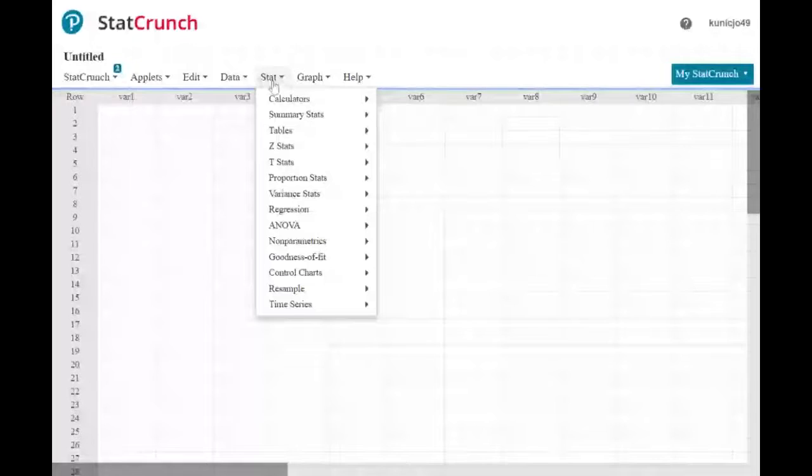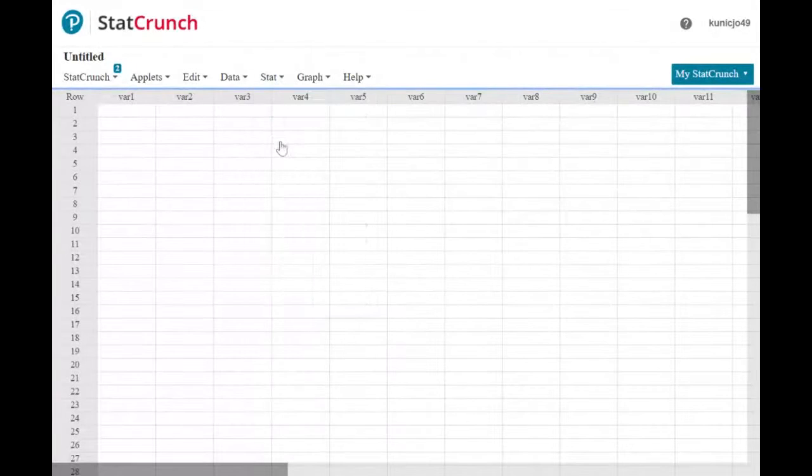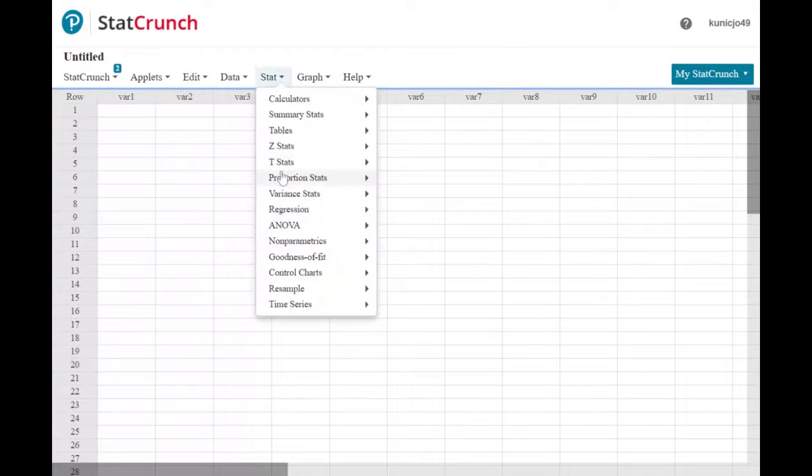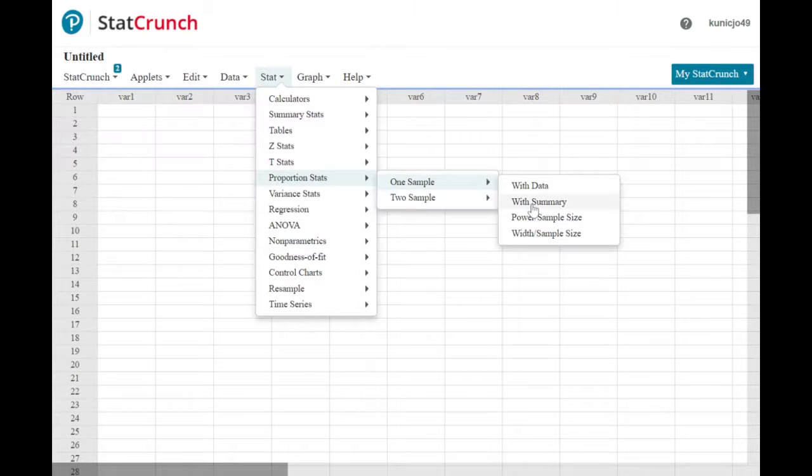So in StatCrunch we're going to do proportion one sample with summary.